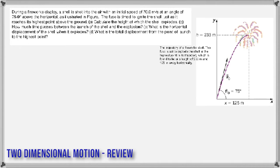Whenever you have a question like this, the first thing you do is resolve the vector into its components. The initial speed is 70.0 meters per second and the angle is given. So you break it up into 70.0 cosine 75 and 70.0 sine 75. Cosine is going to be the horizontal component and sine would be the vertical.